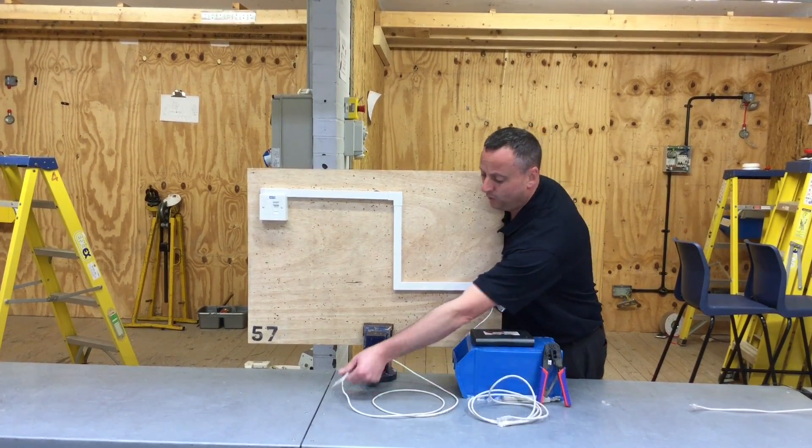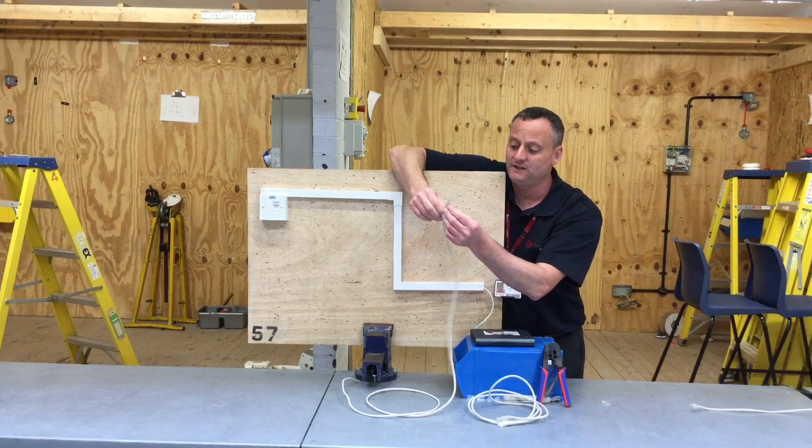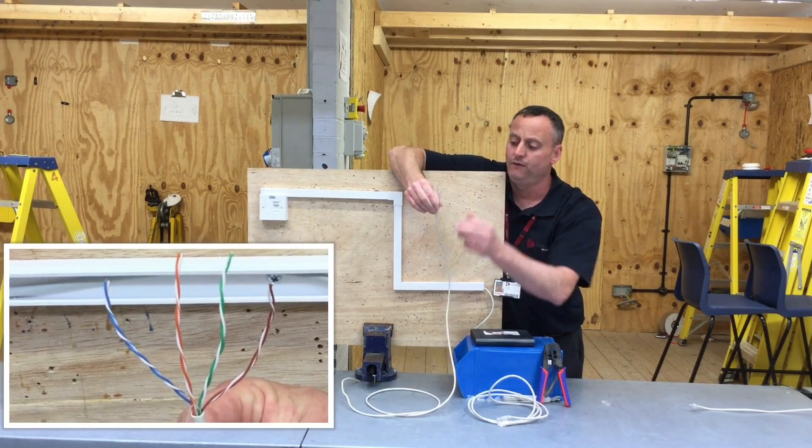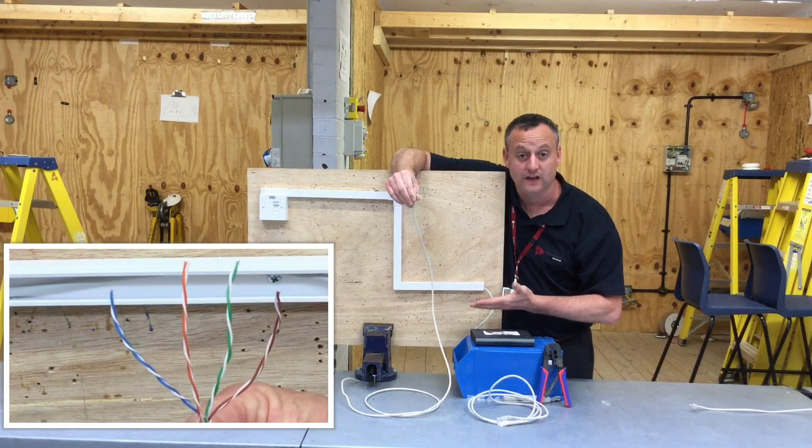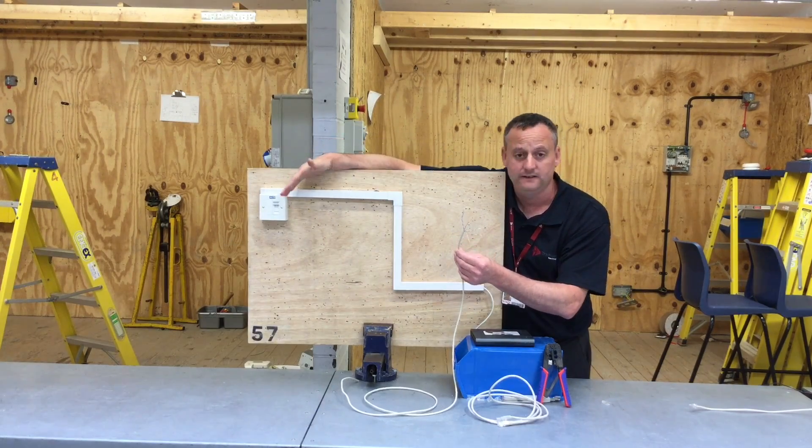We're going to be using four pair and these pairs are twisted. So we've got four pairs, there's actually eight conductors, and we'll look at how they are connected in the RJ45 end and how they're connected in the faceplate as well.